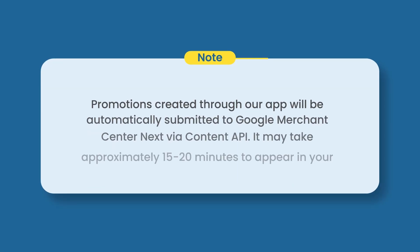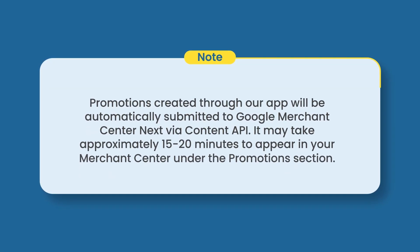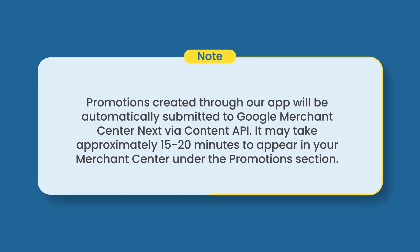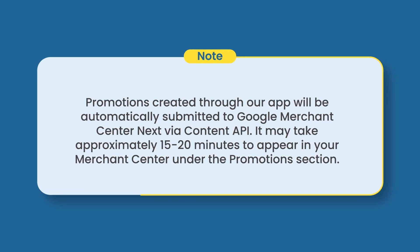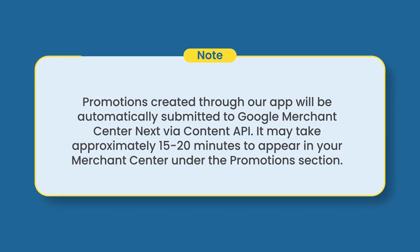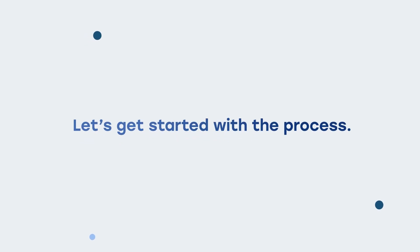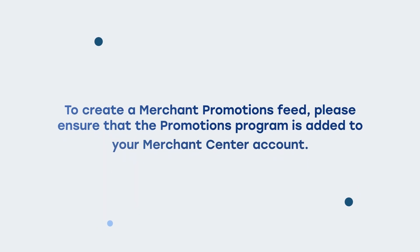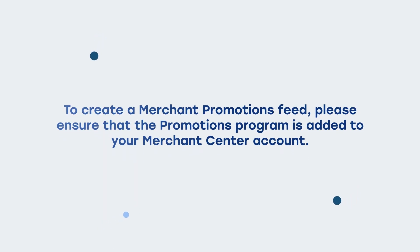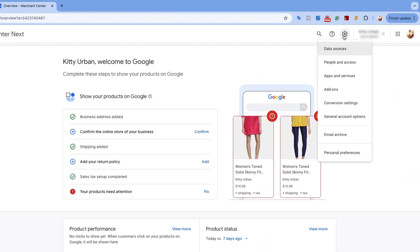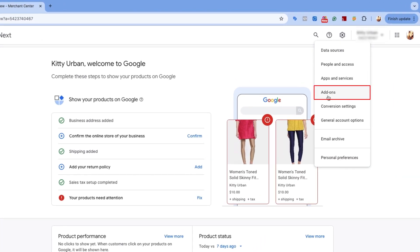Please note that promotions created through our app will be automatically submitted to Google Merchant Center Next via Content API. It may take approximately 15 to 20 minutes to appear in your Merchant Center under the promotions section. To create a merchant promotions feed, please ensure that the promotions program is added to your Merchant Center account. You can enable this from the Add-ons section under Settings in your Merchant Center.